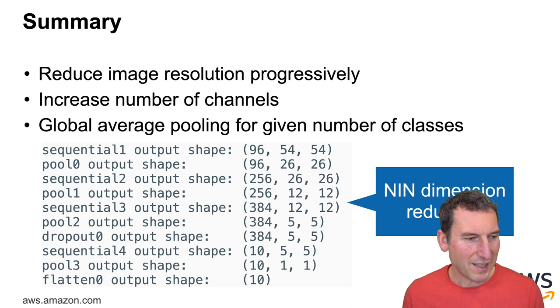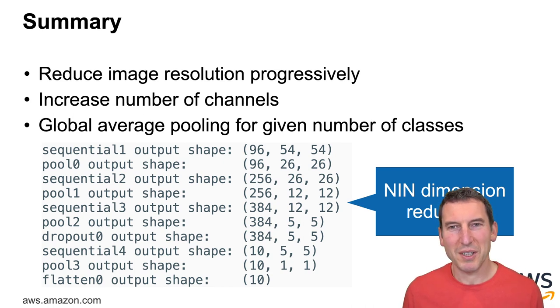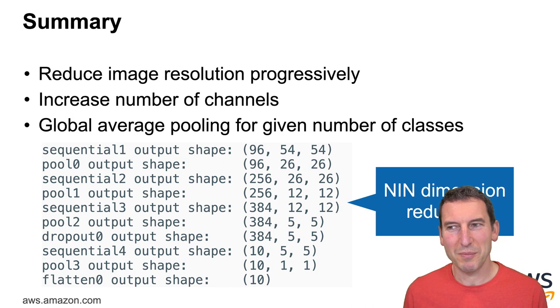Now you might ask why on earth does this global average pooling actually work? Well, let's say I have a cat and this cat can be somewhere in the image. Then it's clear that I want to have a certain amount of translation variance. Global average pooling does that for me. Now might people have tried max pooling or maybe some variant of that? Well, probably yes, maybe there's a little bit more to be gained. This is a very simple idea.